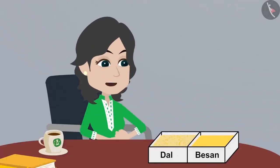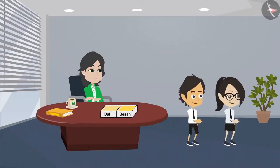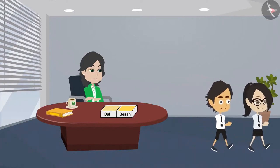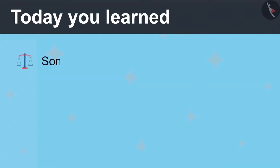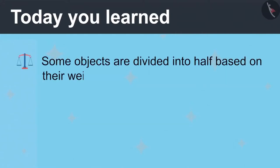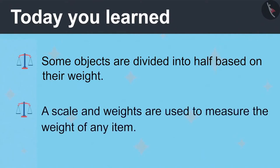Now there is 250 gram dal on one side of the scale. In this way, we can divide solid objects into equal halves. I have understood, madam — some objects have to be measured using weights to divide them. Absolutely right. Today you have learned that some objects are divided into half based on their weight. A scale and weights are used to measure the weight of any item.